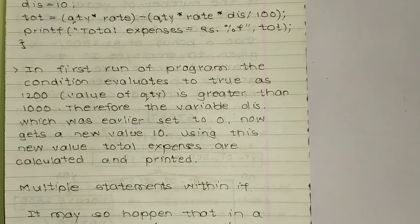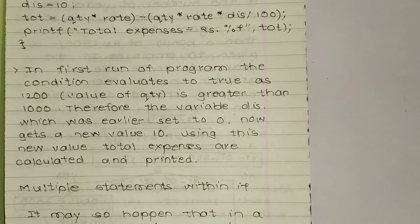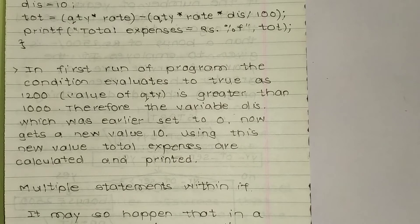So entering 1200 verifies that condition of the program. Therefore, the variable 'dis', which was earlier set to zero, now gets a new value of 10. The variable 'dis' was set to zero before, and now it gets the new value 10.